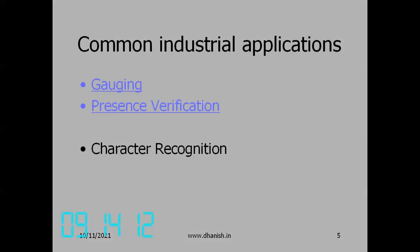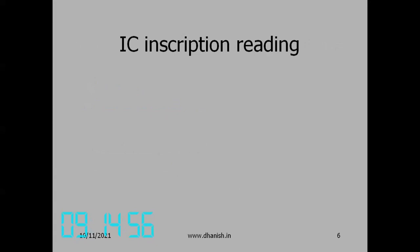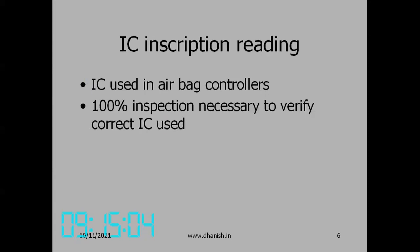Next is character recognition — using a scanner and OCR to convert text. Those days it was a big issue. Then, print quality inspection. Here, an IC was used in airbag controllers, and 100% inspection was necessary to verify that the correct IC is used. ICs are assembled into the automobile.